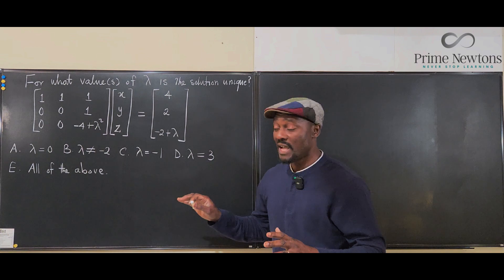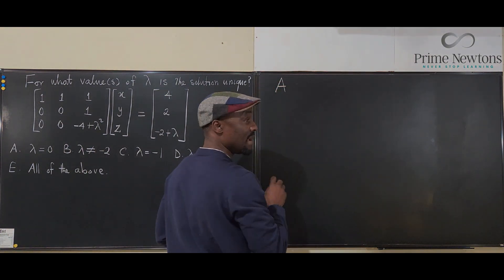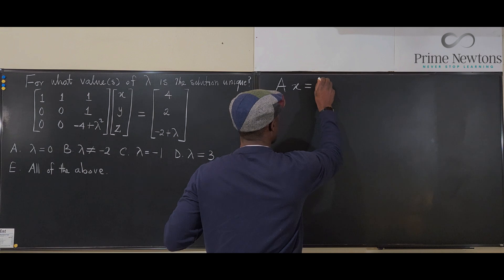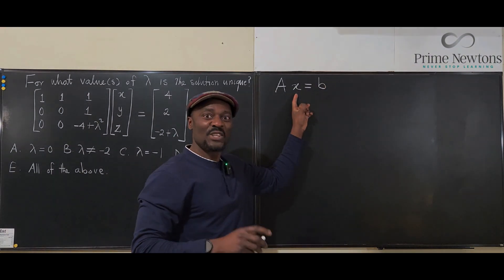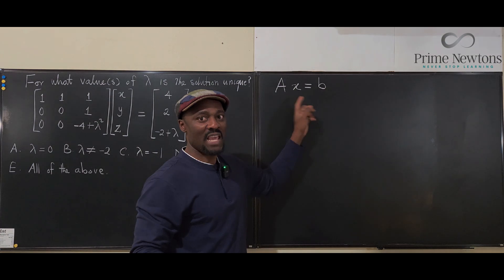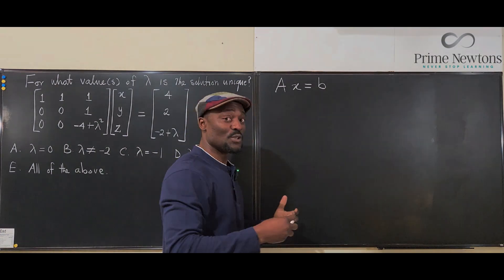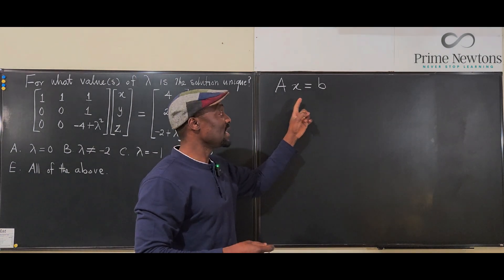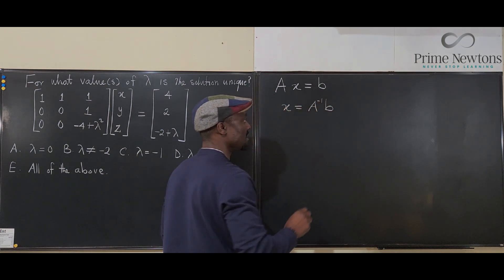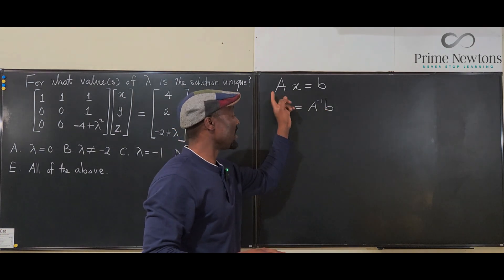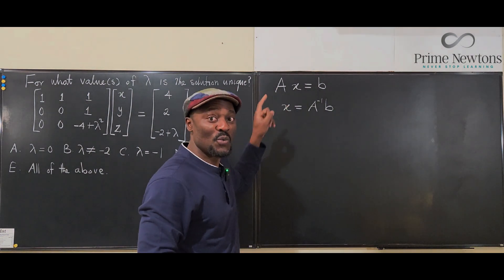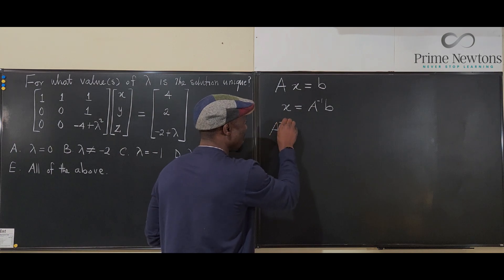Whenever we have an equation like Ax = B, where A is a matrix multiplying a vector X to get B, the solution is only unique if you can find the inverse of A. What you're doing is looking for the inverse of A and bringing it to the other side, so you can say X must equal A-inverse multiplied by B — which is the same as B divided by A, but in matrix sense we find the inverse.